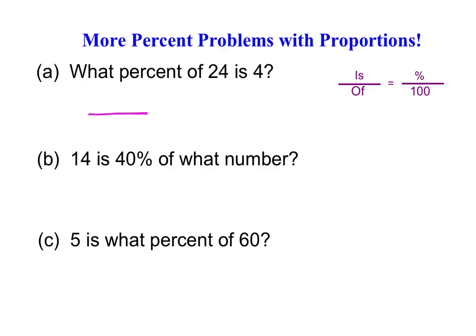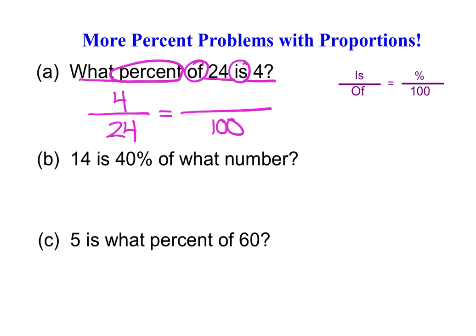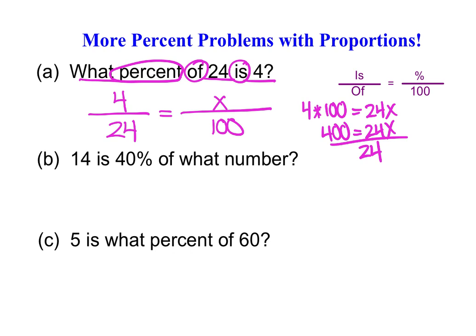Let's practice more. For 'what percent of 24 is 4': 'of 24' puts 24 in the denominator, '4 is' puts 4 in the numerator, and 'what percent' means x goes over 100. Cross-multiplying gives 4 × 100 = 24x, so 400 = 24x. Dividing by 24 gives x ≈ 16.7. Because this asks for a percent, the answer is approximately 16.7%.